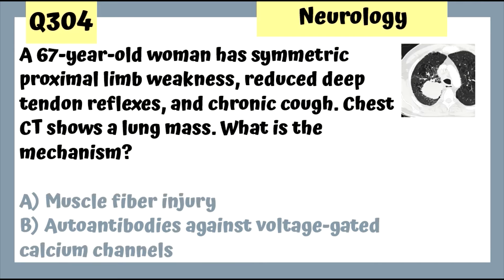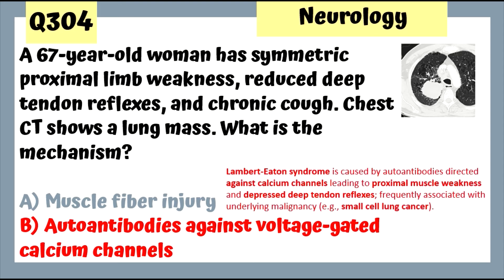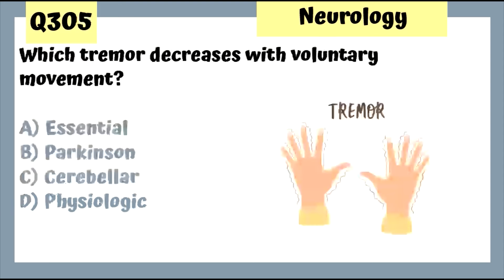Question 304: A 67-year-old woman has symmetric proximal limb weakness, reduced deep tendon reflexes, chronic cough, and a lung mass on chest CT — mechanism is autoantibodies against voltage-gated calcium channels. This is Lambert-Eaton Myasthenic Syndrome with small cell lung cancer association.